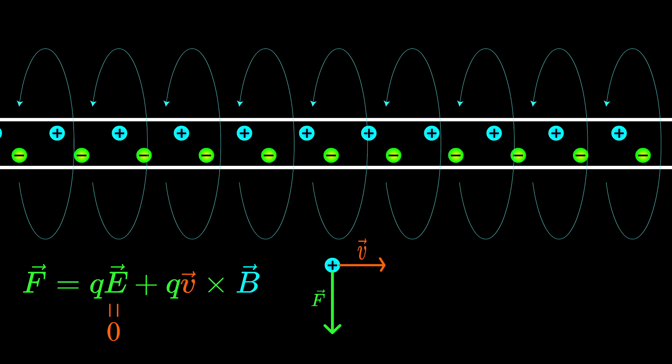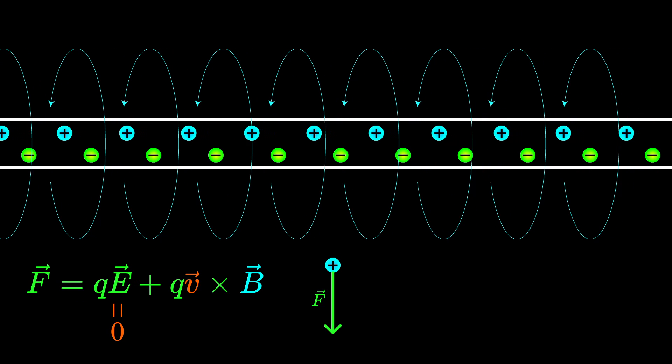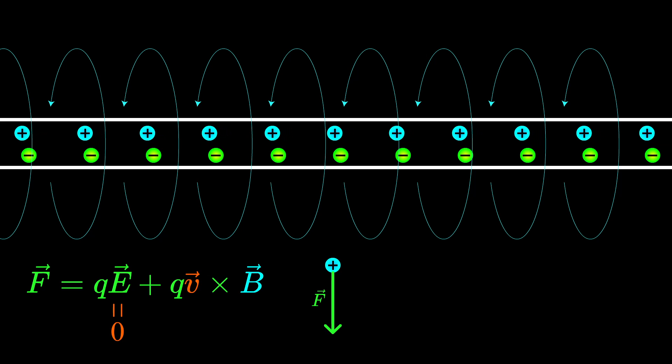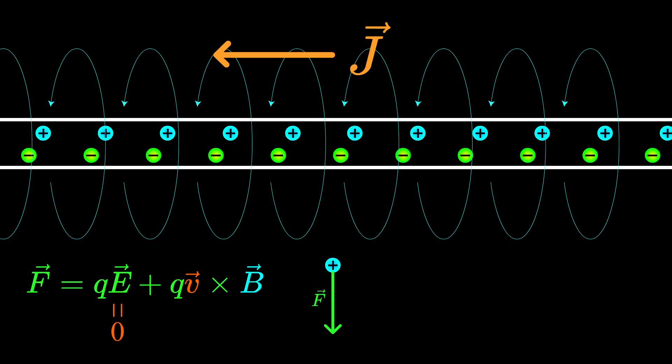But now let's look at this problem from the reference frame of the particle. In that frame, the electrons are stationary and the protons are moving to the left — so the current still flows to the left, creating the same magnetic field. However, the velocity of the particle is now zero. Looking at the Lorentz force, not only is the electric part zero, but the magnetic part is also zero. Therefore, there should be no force whatsoever. This is certainly a problem, because the result of an experiment should not depend on the reference frame we choose.